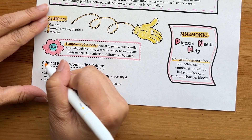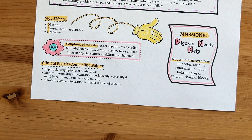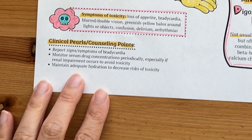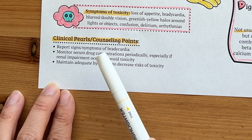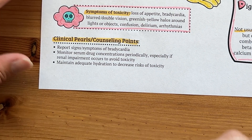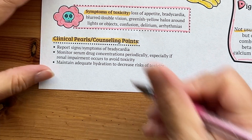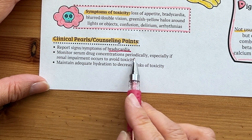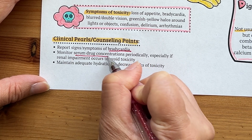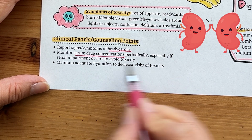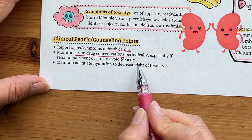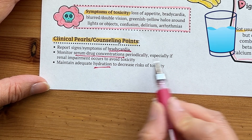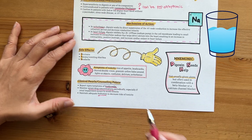Now let's discuss some clinical pearls and counseling points to keep in mind. Counsel patients to report signs and/or symptoms of bradycardia to their healthcare provider. This medication requires serum drug monitoring periodically, especially if the patient has renal impairment. You want to ensure that the patient maintains adequate hydration to decrease the risk of toxicity.